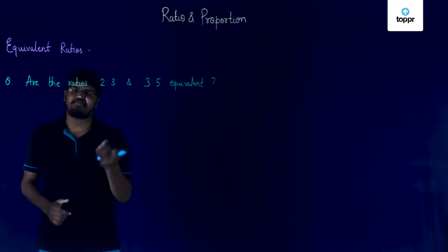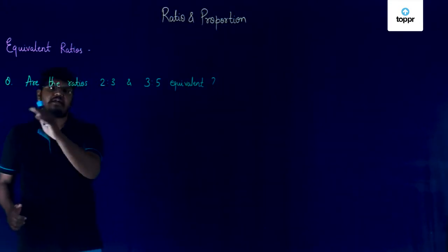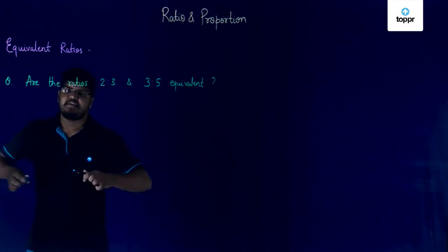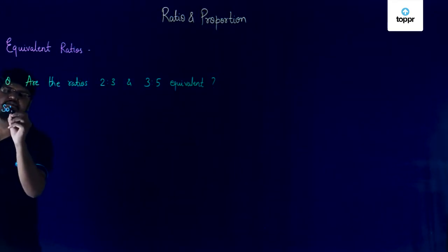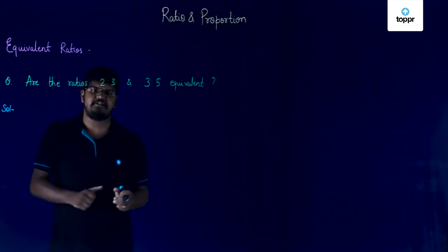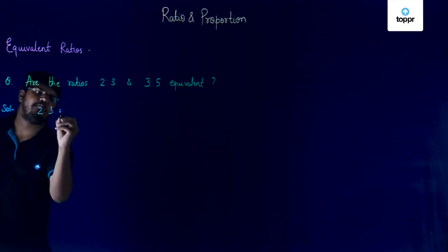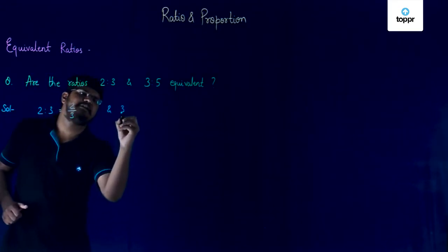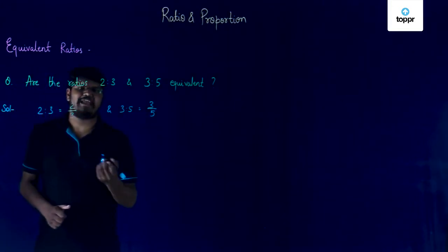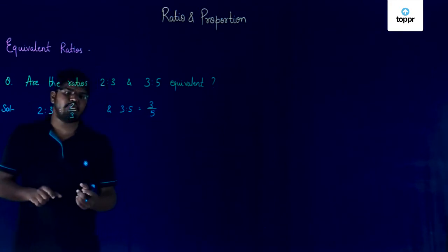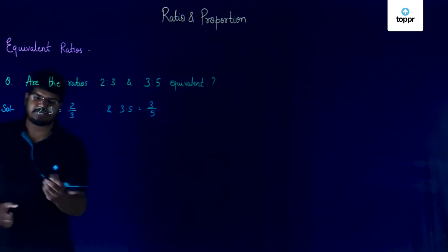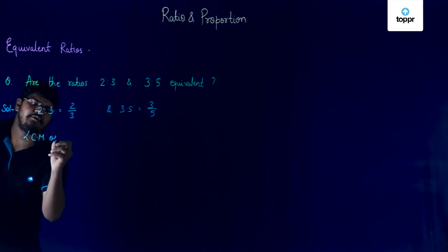Let's work on this concept with a question. Are the ratios 2 is to 3 and 3 is to 5 equivalent? As we've already discussed, the first step is to convert these ratios into fractional form. So, 2 is to 3 will become 2 by 3 and 3 is to 5 will become 3 by 5. For our next step, we have to make the denominators equal using the LCM method. Let us first find the LCM of 3 and 5.